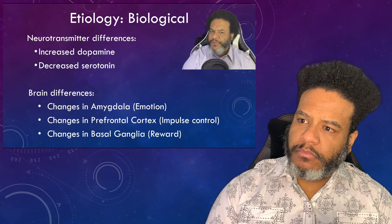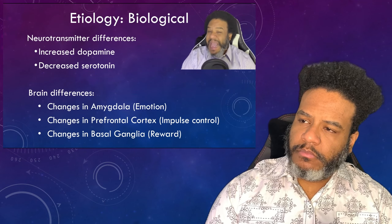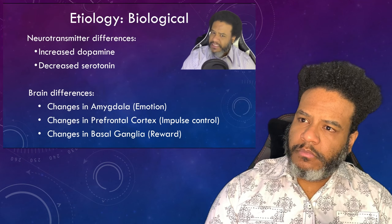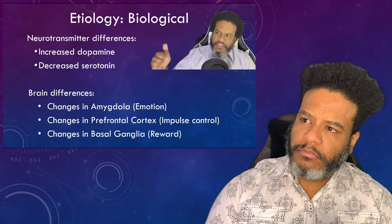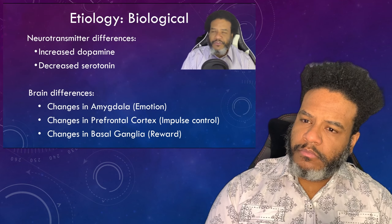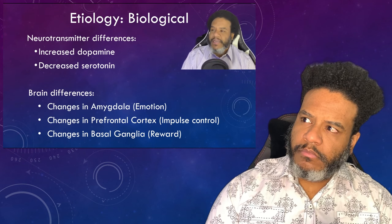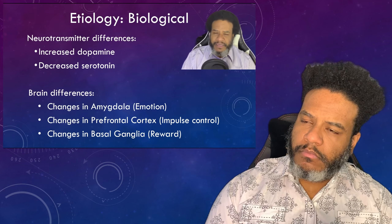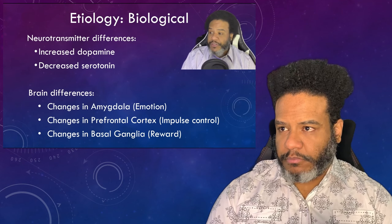From a biological perspective, like depression, bipolar disorder is associated with decreased serotonin. However, it's also associated with increased dopamine — linked to pleasure and reward-seeking behavior — and elevated glutamate, which can cause overexcitation. There are also differences in brain areas such as the amygdala (emotion), the prefrontal cortex (impulse control), and the basal ganglia (reward). Dysfunctions in these brain areas might lead to an increased risk of bipolar disorder.